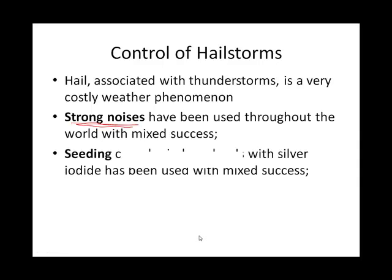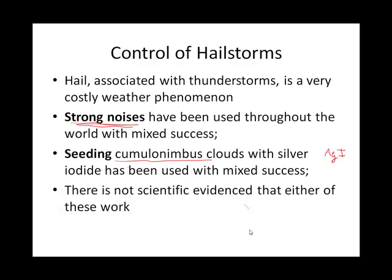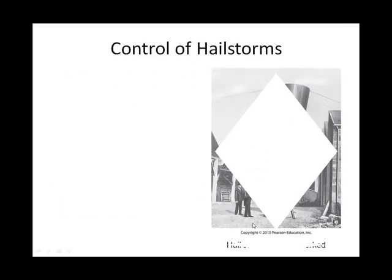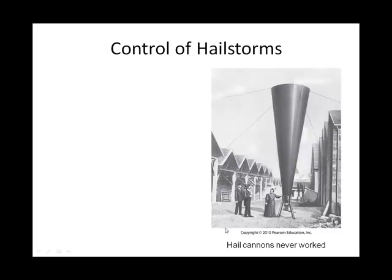There's mixed success with that noise approach. Another way to try to combat a hailstorm is to take that cumulonimbus cloud and seed it with silver iodide — again with mixed success — to prevent the hailstorm. Here's a picture of the device that created a large noise to try to make it so thunderstorms didn't have hail associated with them. It kind of reminds me of the snake oil salesman — again, mixed success.